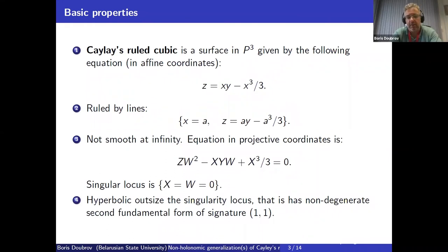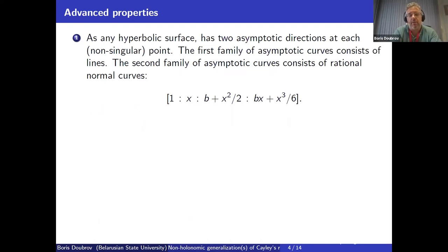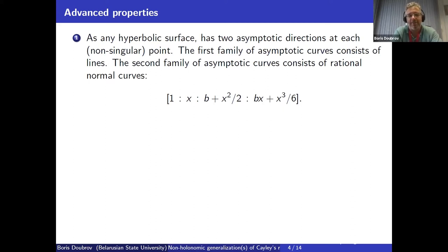It is hyperbolic outside the singularity locus, so it has a non-degenerate second fundamental form of signature (1,1). As a hyperbolic surface it has two asymptotic directions at each non-singular point, and therefore we have two families of asymptotic curves tangent to these directions. One family consists of these lines — this is a two-parameter ruled surface of hyperbolic type. The second family are not lines but rational curves in P3, and this is a complete family of rational curves that are asymptotic curves for Cayley's ruled surface.